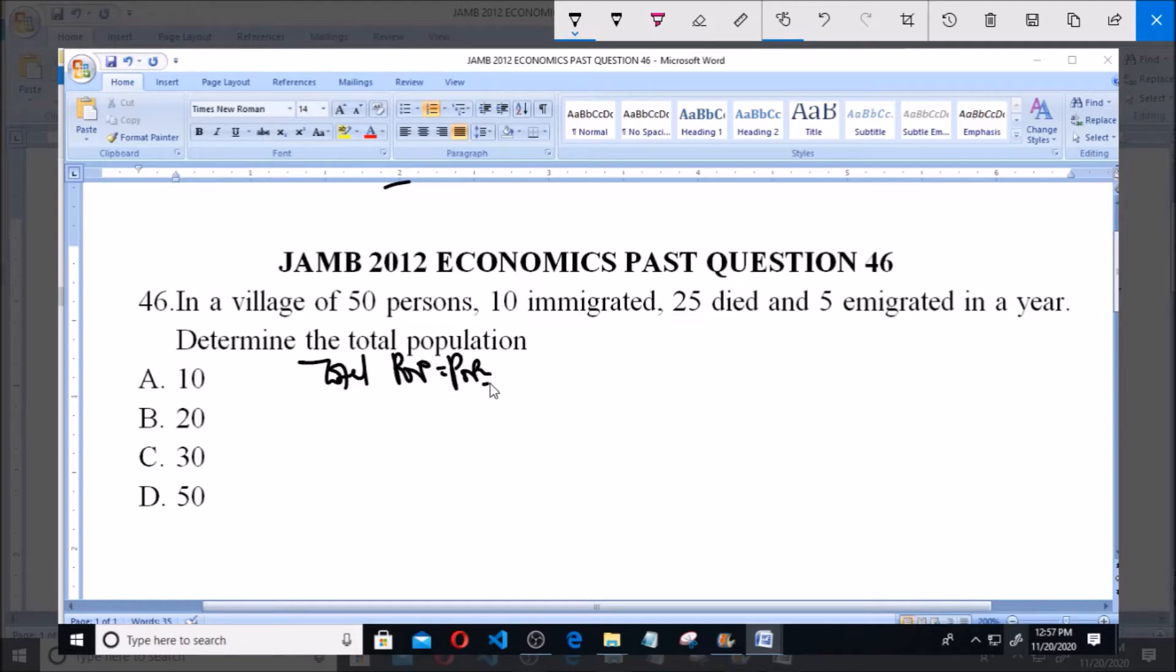The formula is: population plus net migration plus number of births minus number of deaths.